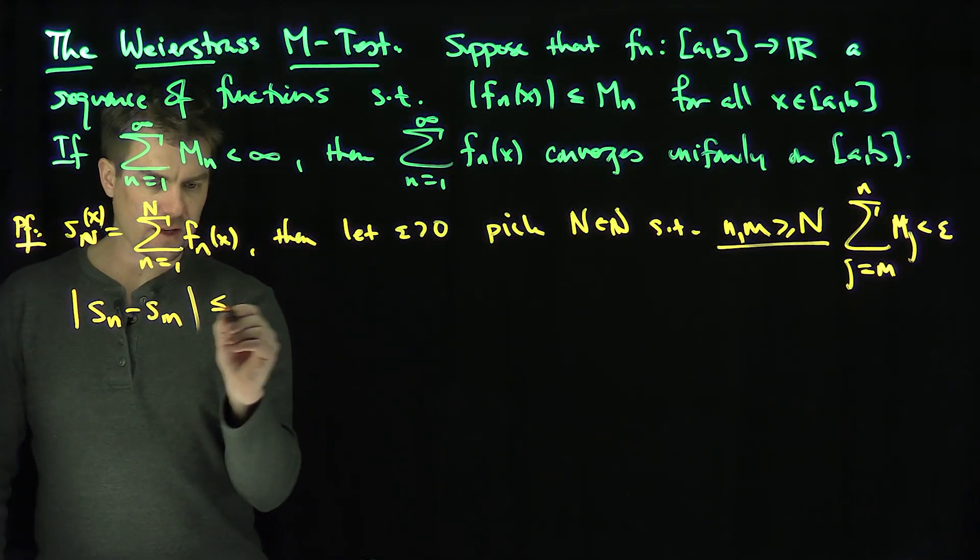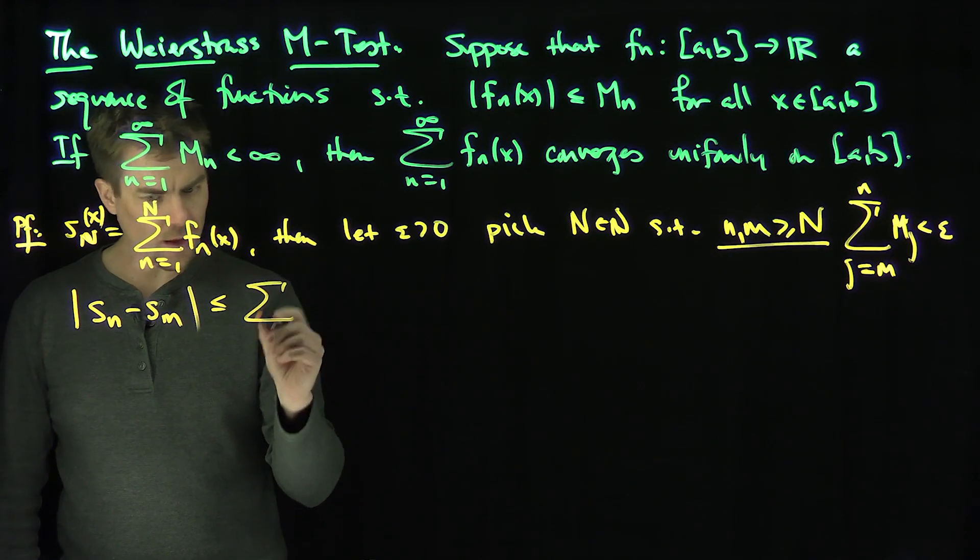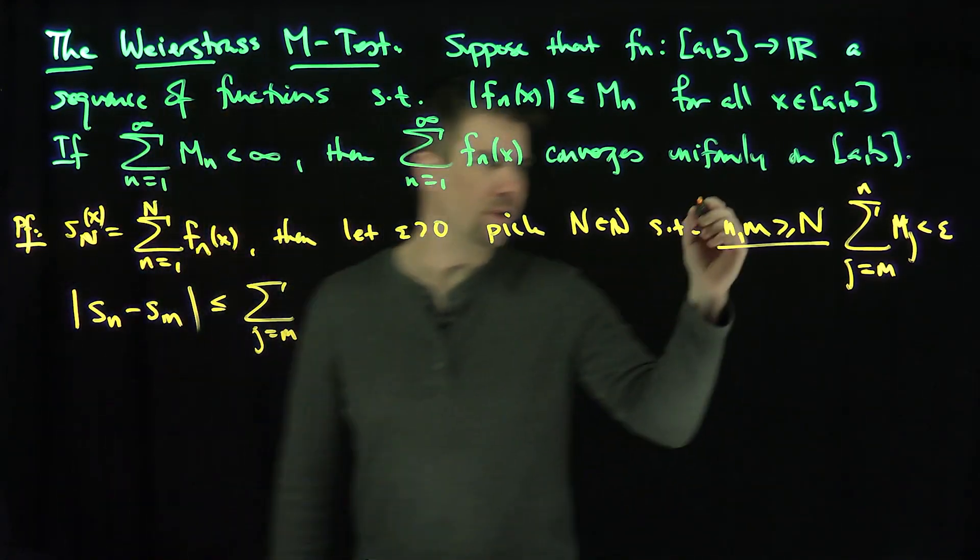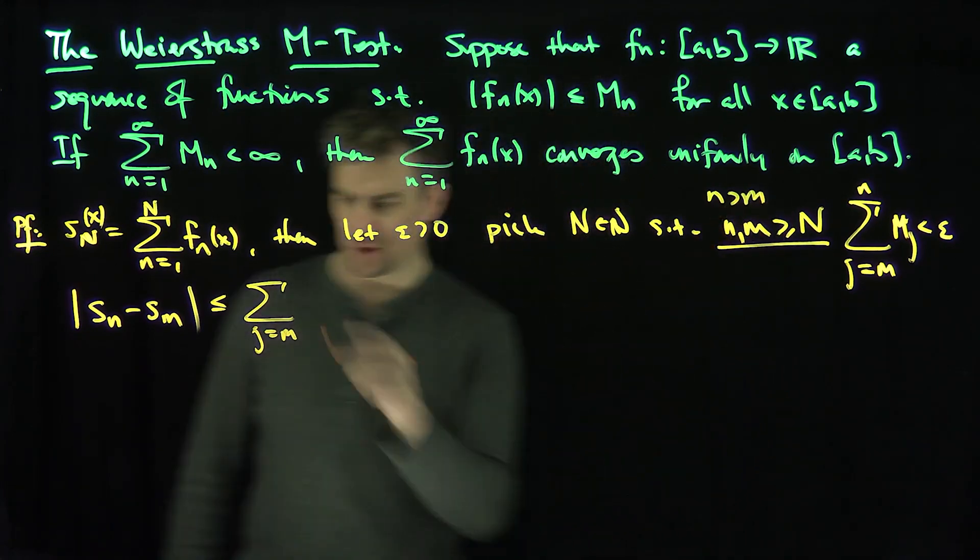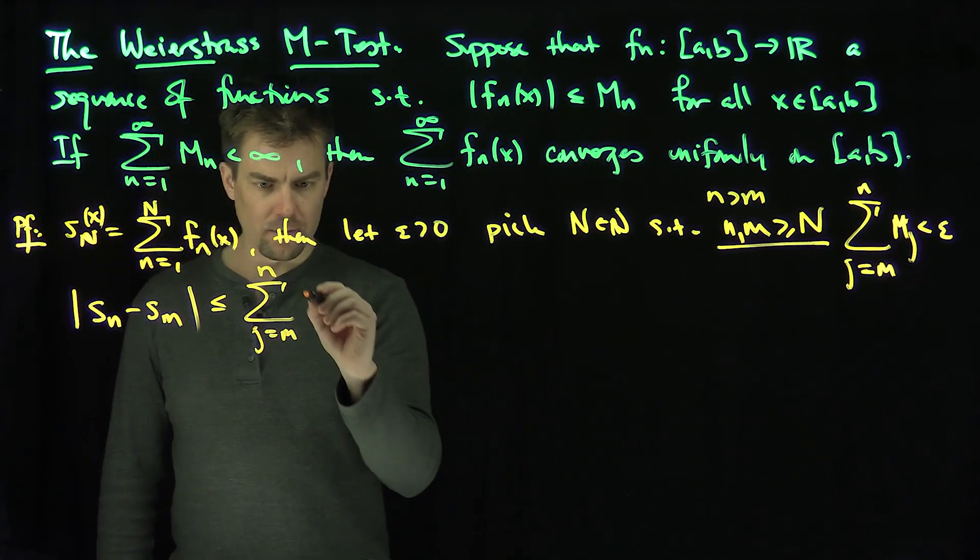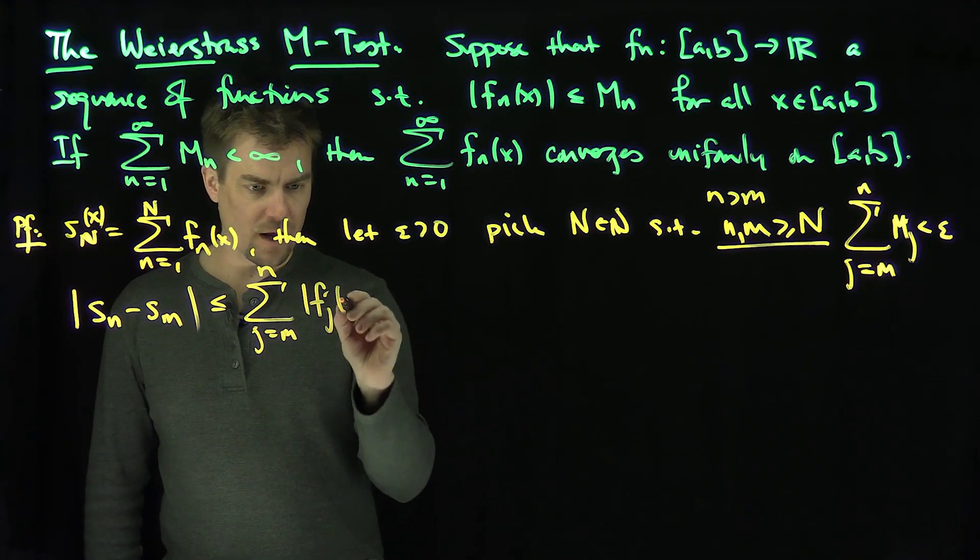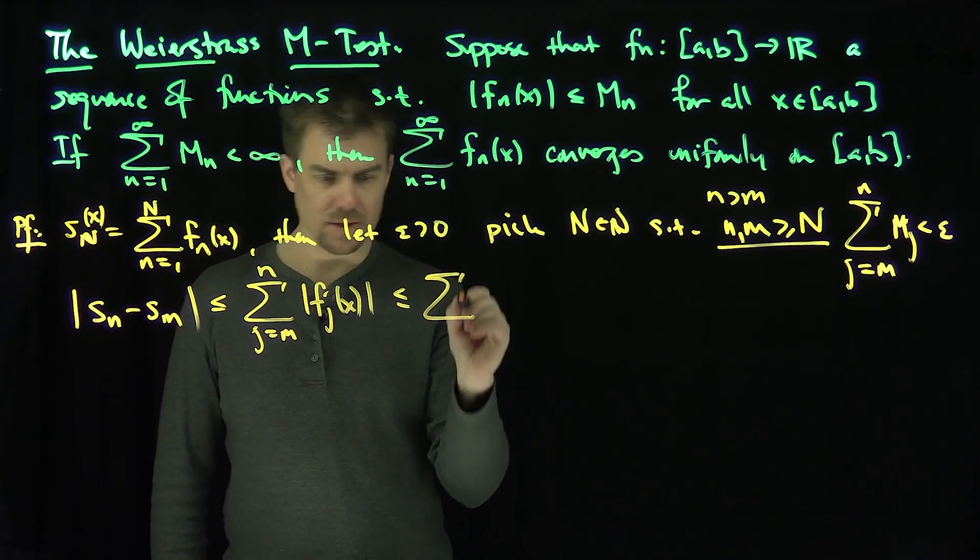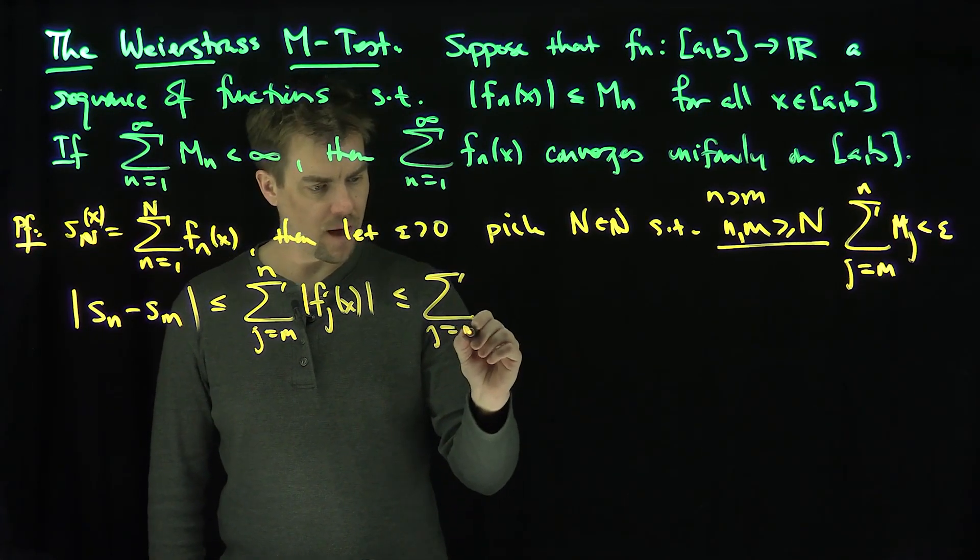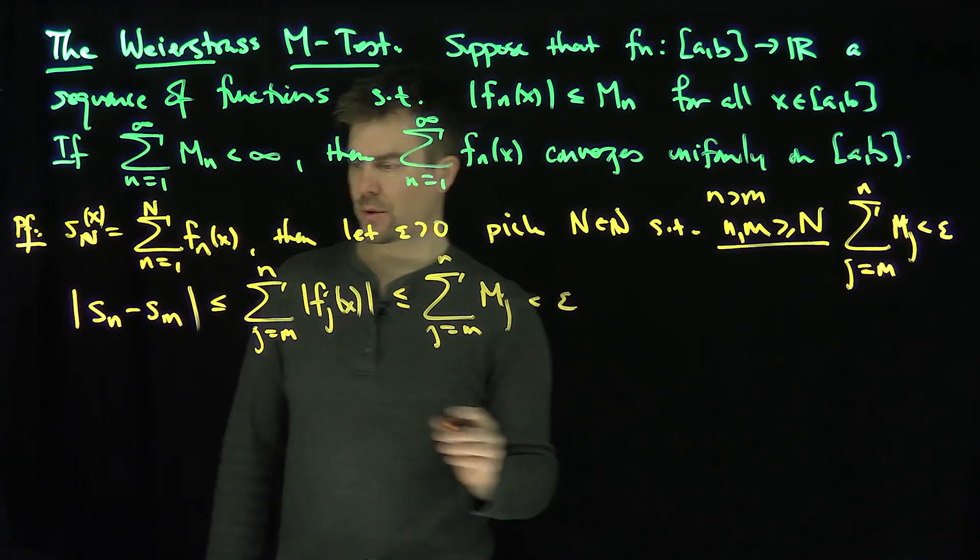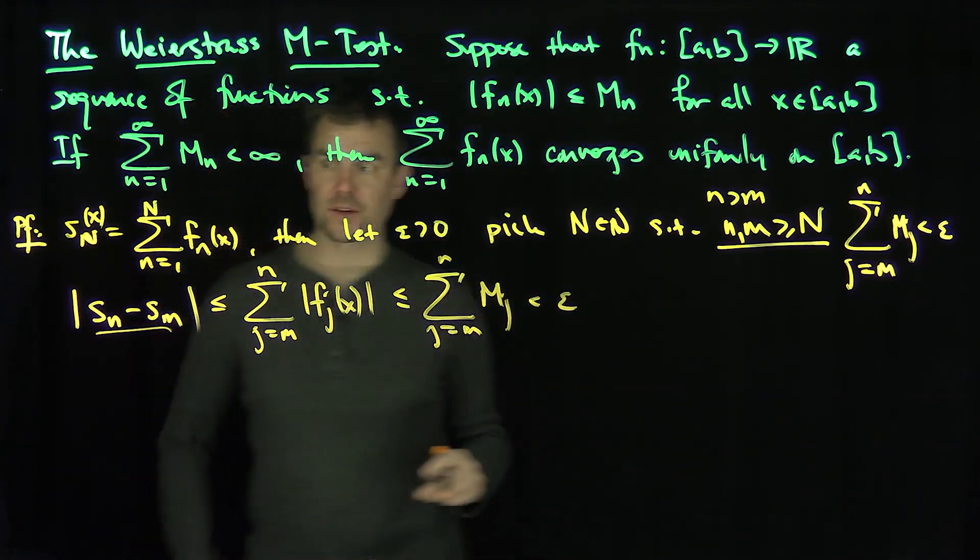This is going to be less than or equal to, by the triangle inequality, the sum from j=m to n of |f_j(x)|, and I'm going to assume here that n is bigger than m. That's less than or equal to, by assumption, the sum from j=m to n of m_j, and that's less than epsilon.